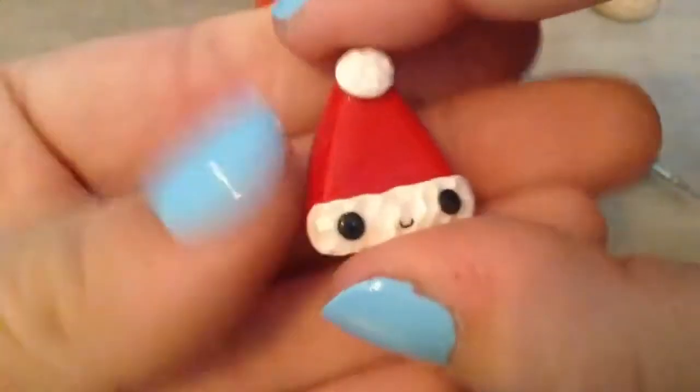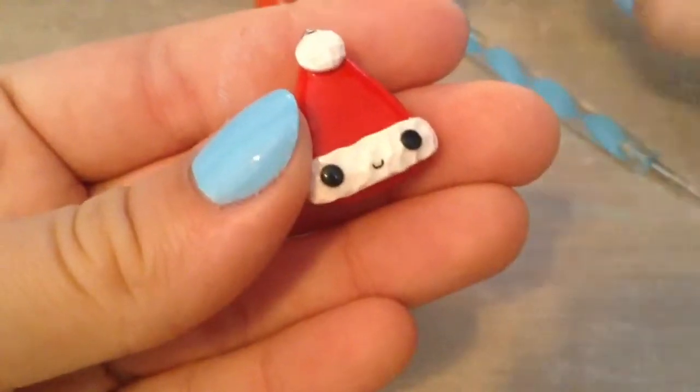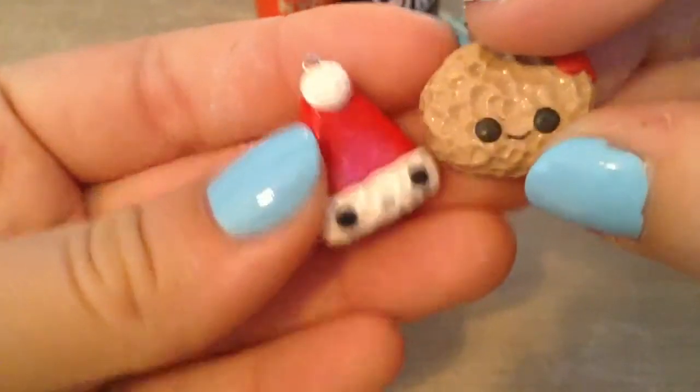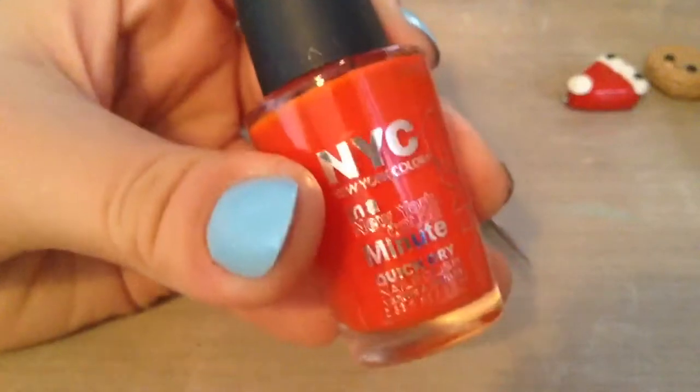The dotting tool we're going to make can be used to texture your polymer clay, such as on this Santa hat and chicken nugget charms. It can also be used to paint on faces on your charms and for nail art designs.